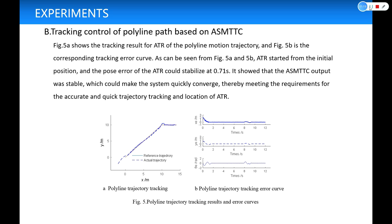Tracking control of polyline paths based on ASMTTC: Figure 5a shows the tracking result for ATR of the polyline motion trajectory, and Figure 5b is the corresponding tracking error curve. As can be seen from Figure 5a and 5b, ATR started from the initial position, and the pose error of the ATR could stabilize at 0.71 seconds. It showed that the ASMTTC output was stable, which could make the system quickly converge, thereby meeting the requirements for the accurate and quick trajectory tracking and location of ATR.